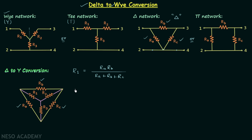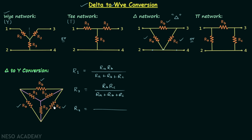Following the same process: R2 equals RB multiplied by RC, divided by RA plus RB plus RC. And R3 is equal to RA multiplied by RC in the numerator, with RA plus RB plus RC in the denominator.